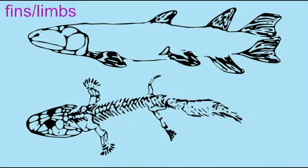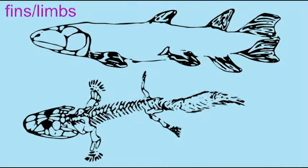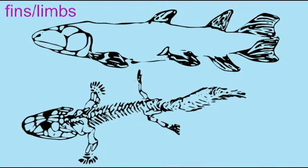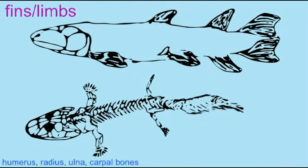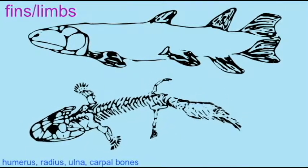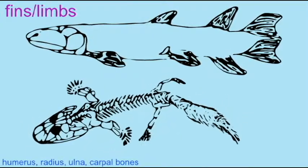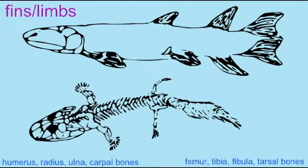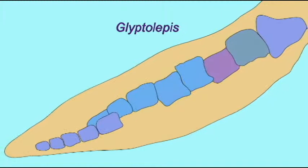Homologous bones exist in the limbs of the early tetrapods and the fins of advanced Sarcopterygian fish. Both these early amphibians and their Sarcopterygian relatives possessed a humerus, radius, ulna, and carpal bones in their upper element, the arm or the pectoral fin.